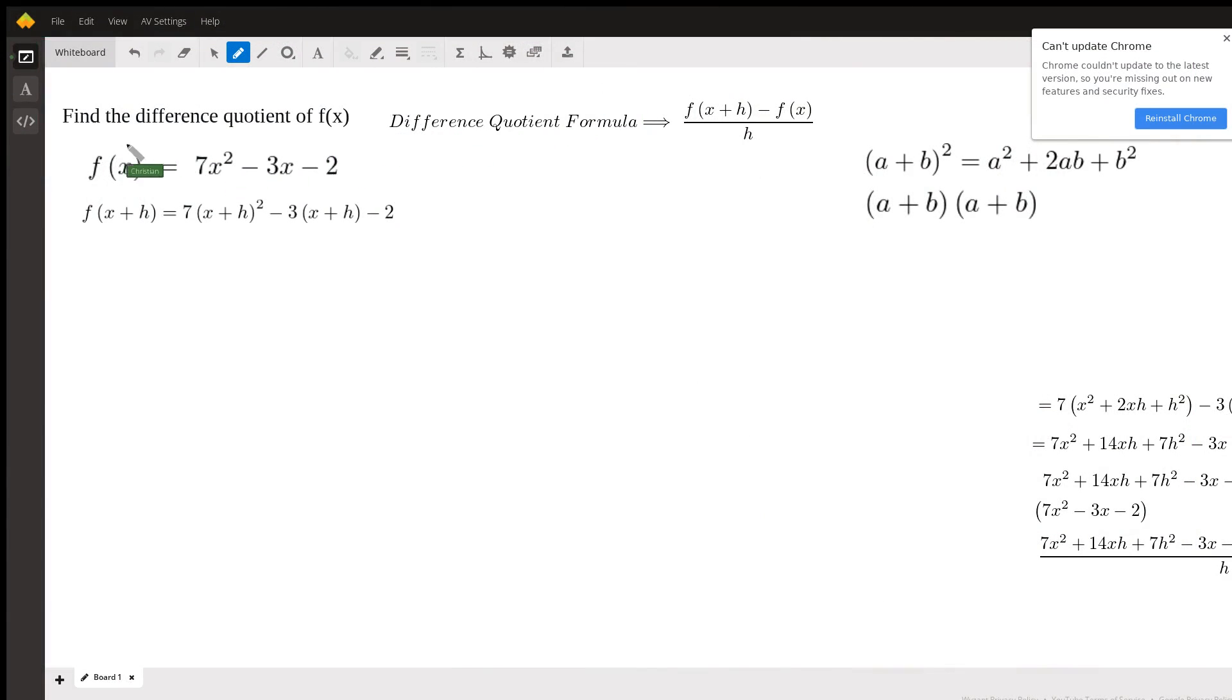Okay, so the problem presented to us says find the difference quotient of function f(x), where f(x) is given as 7x² - 3x - 2.